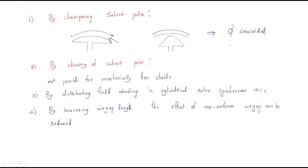Second method: skewing the salient poles. By applying skewing we keep some angle on the salient poles. However, there is a problem with skewing of the salient pole — it is not mechanically possible because it has very less stability. That is why skewing of salient poles is generally not practically used.